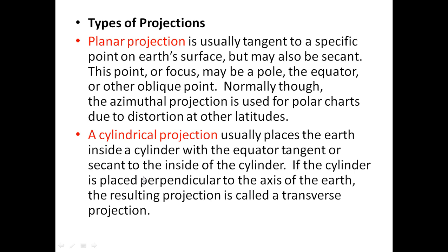The cylindrical coordinate system essentially places the whole Earth inside a cylinder, with the equator tangent or secant to the inside of the cylinder. If the cylinder is placed perpendicular to the axis of the Earth, the resulting projection is called the transverse projection. If parallel to the axis, it is called the normal projection. If neither parallel nor perpendicular, it is called the oblique cylindrical projection system.